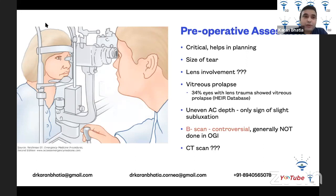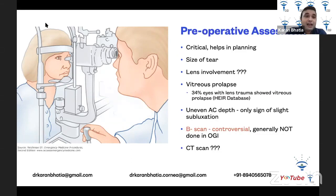In preoperative assessment, look at the size of the tear, whether the lens is involved, and check in retro-illumination for a better idea. Check whether there's any vitreous collapse, and whether there's an uneven AC depth — that could sometimes be the only sign of slight subluxation of the lens. A B-scan is controversial, and I generally do not prefer it in open globe injuries. However, if looking for an intraocular foreign body, a B-scan may occasionally be used, and must be very gentle.